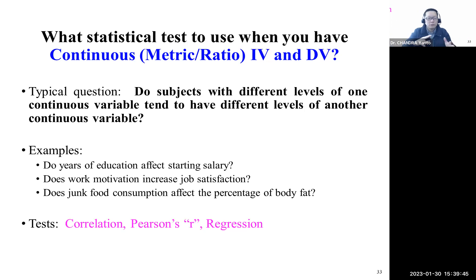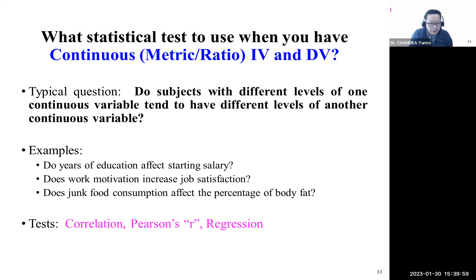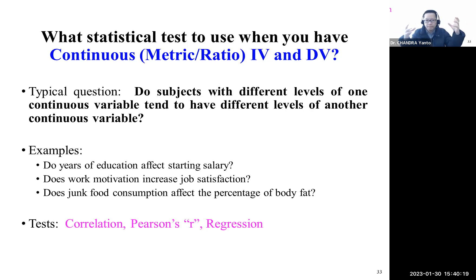If your independent variable is continuous — metric or ratio — and your dependent variable is also continuous or metric, for example: does years of education affect starting salary, does work motivation increase job satisfaction, or does junk food consumption affect percentage of body fat? Because both IV and DV are continuous, you can use correlation to look at the relationship, and you can also use regression.